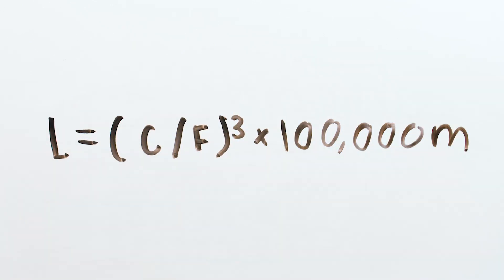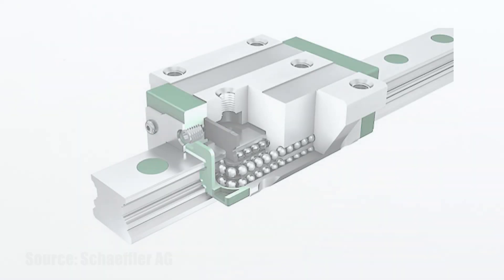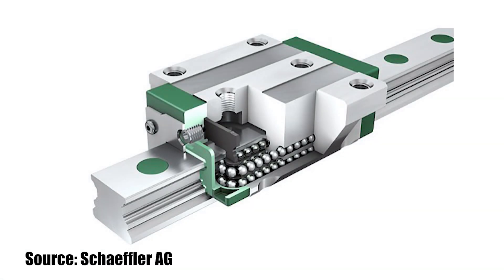In the last segment regarding recirculating ball and roller bearings, we chose a bearing and determined its L10 life based on its dynamic load capacity, C, and the applied load, F. But in many cases, the situation is reversed — you know what bearing life the application requires, but you're not sure which bearing will provide the required life.